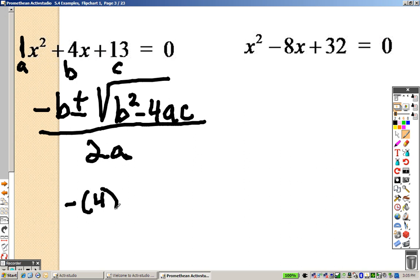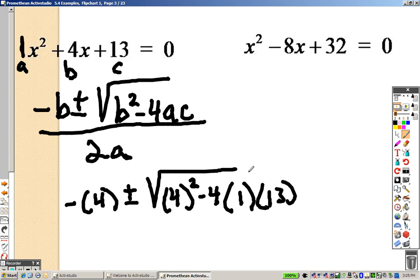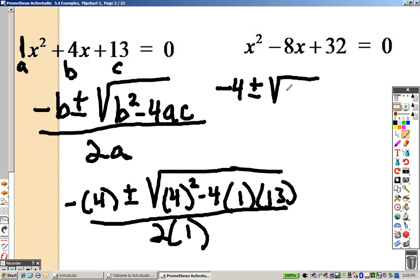Negative 4 plus or minus the square root of 4 squared minus 4 times a, which is 1, times c, which is 13, all divided by 2 times a, which is 1. So underneath the square root sign, I get 4 squared minus 4 times 1 times 13. That gives me negative 36. So I have negative 4 plus or minus the square root of negative 36, and 2 times 1 is 2.